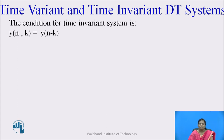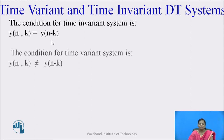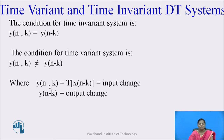Similarly, in case of discrete time signals, the condition for a time invariant system is y(n, k) equal to y(n − k), and for a time variant system, y(n, k) is not equal to y(n − k). We know that y(n, k) is equal to the transform of x(n − k), which is the change in the input, and y(n − k) is the output change. This is the condition for time invariant and time variant in case of discrete time systems.